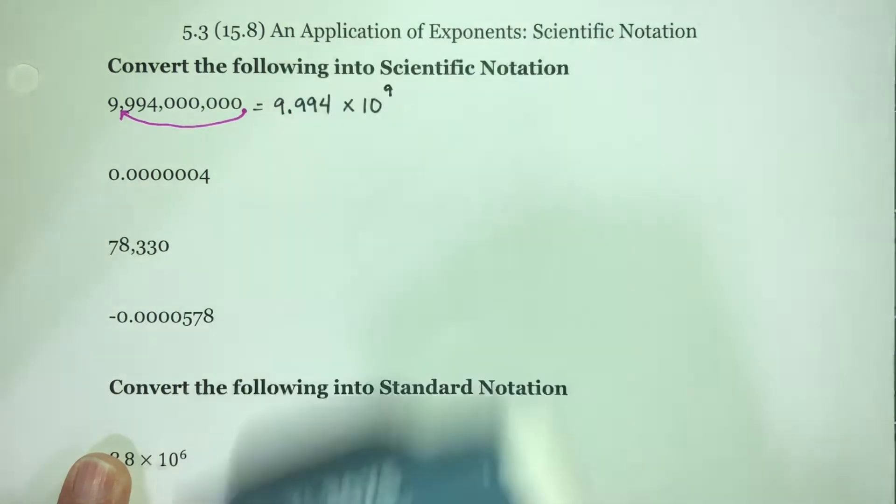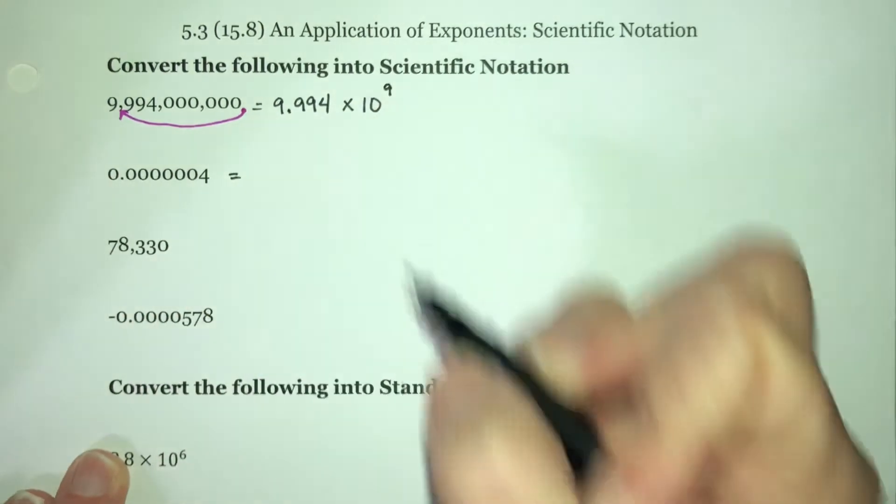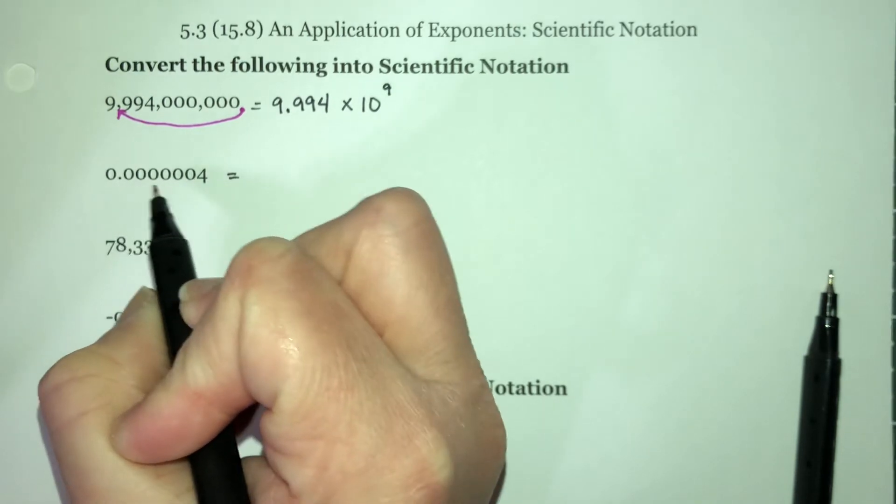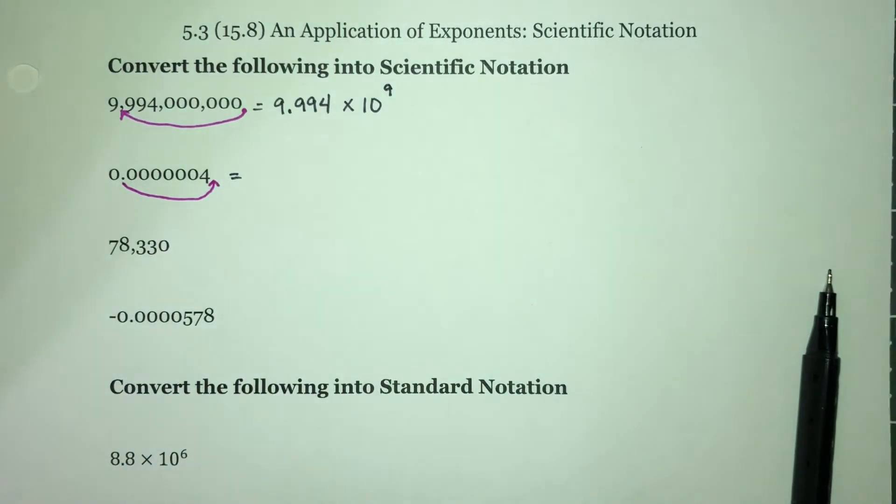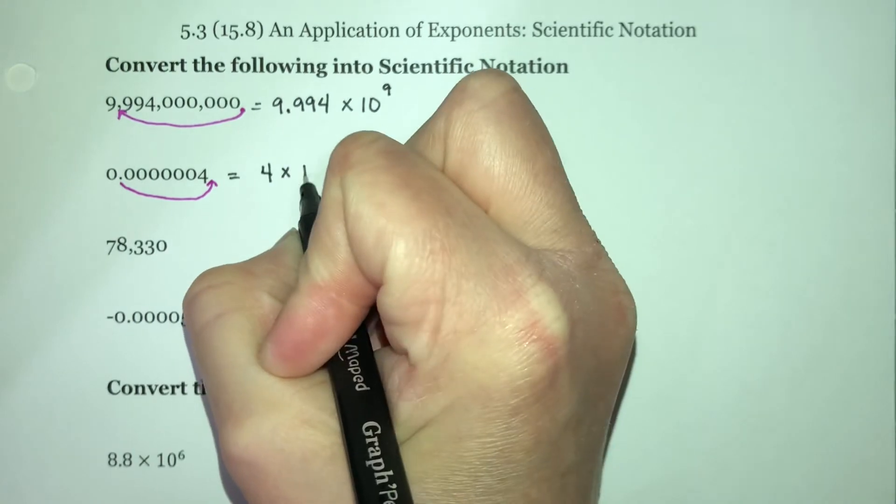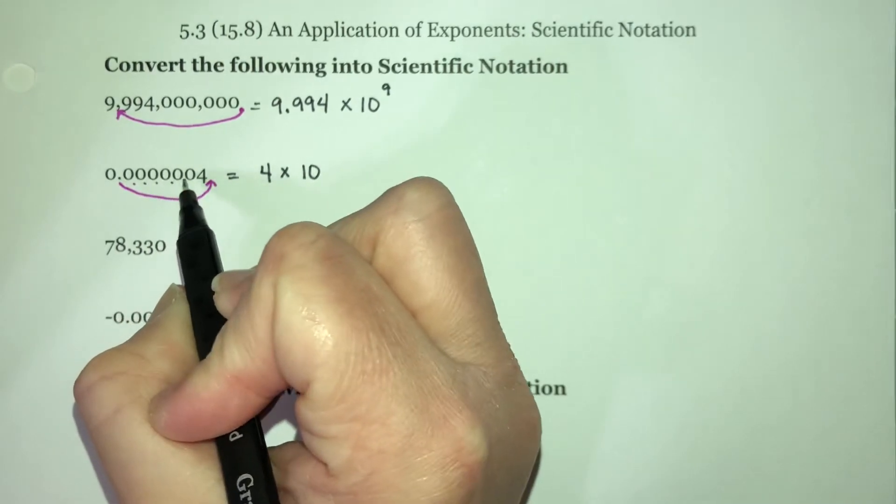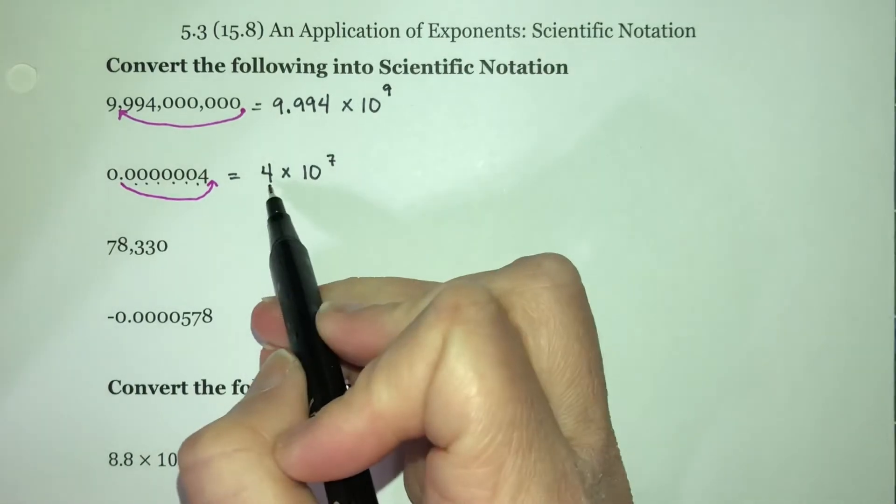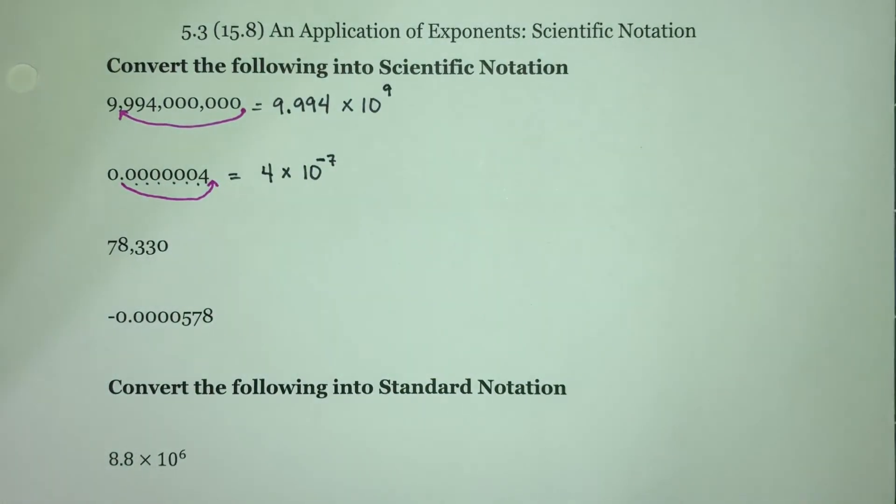For this one, I want to take this decimal point and I need to move it so that I have one number in front that's not a zero, which means I need to move it all the way over to here. So this becomes simply 4 times, it's always 10 to some power. How many places did I move it? One, two, three, four, five, six, seven spots. To go from 4 to this, I need to be making it smaller, so I do a negative 7 exponent.